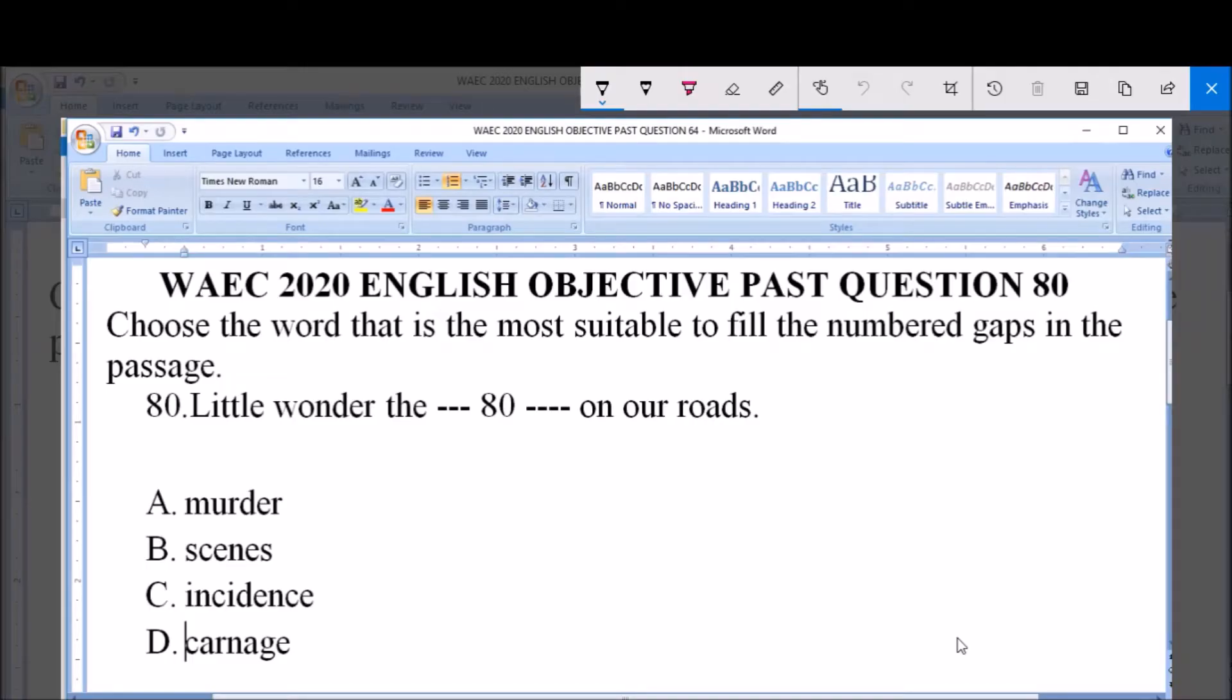Good morning, welcome. This is YK here. 2020 English objective past question, question number 80. The instruction says choose the word that is the most suitable to fit the numbered gaps in the passage.